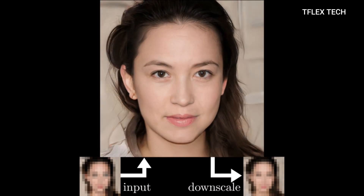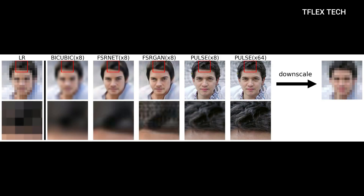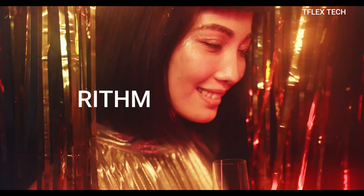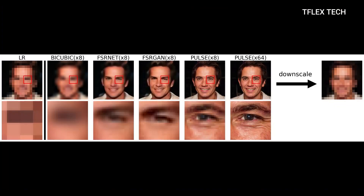The PULSE system, developed by Dr. Rudin and her team, creates images with 64 times the resolution of the original blurred picture. The PULSE algorithm achieves such high levels of resolution by reverse-engineering the image from high-resolution images that look similar to the low-resolution image when downscaled.